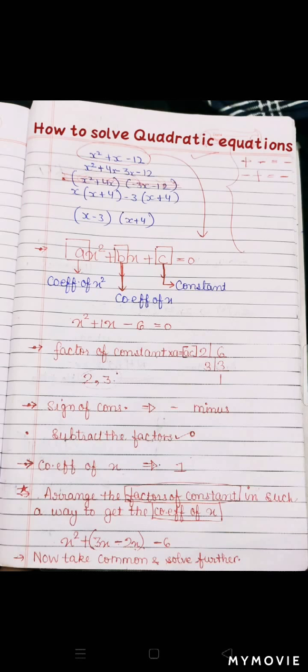Ab humein karna kya hota hai yeh ek example ki madad se dikhana hai. Maine example liya: x² plus x minus 6. Ab kyunki bachche confused ho jaate hain, toh x ko humne 1x likh liya — although hamein pata hai we never write 1x, but still I have written to explain. First step hota hai: humein constant ke factors karne hote hain. Toh maine factor karke dikhaya: constant jo hai woh 6 hai. 6 ke factors: two threes are six — aise factor karne hain jinko multiply karne pe 6 aana chahiye. Toh humare paas factors ho gaye: 2 and 3.